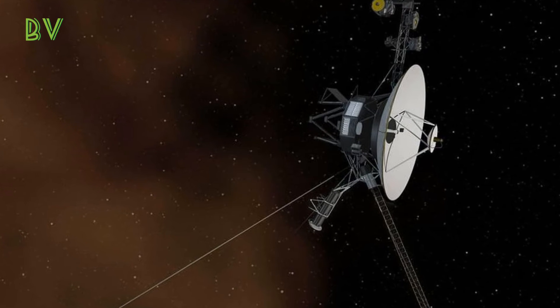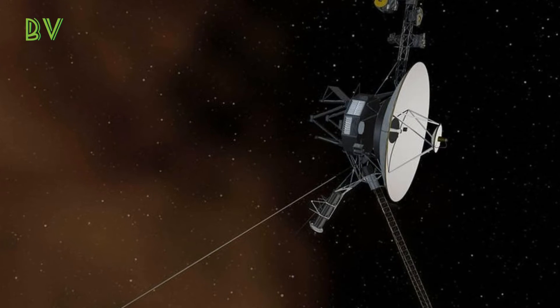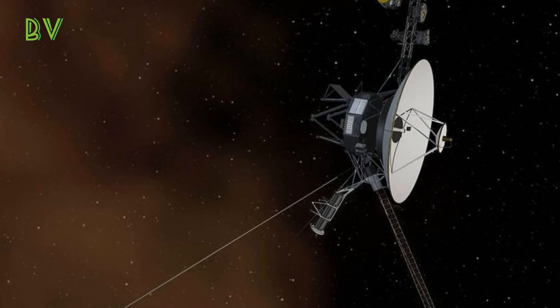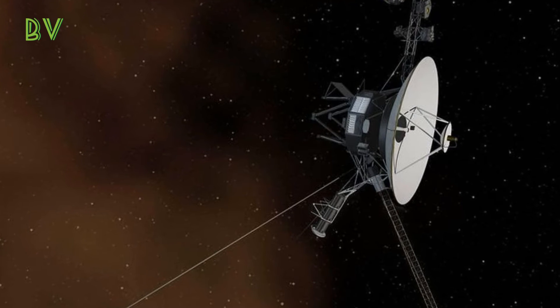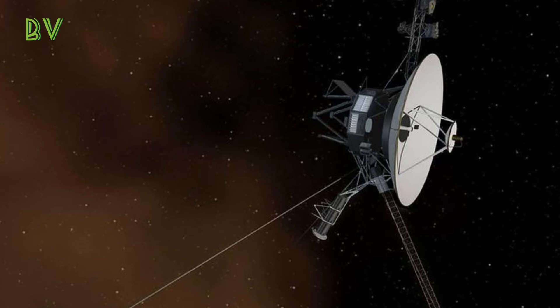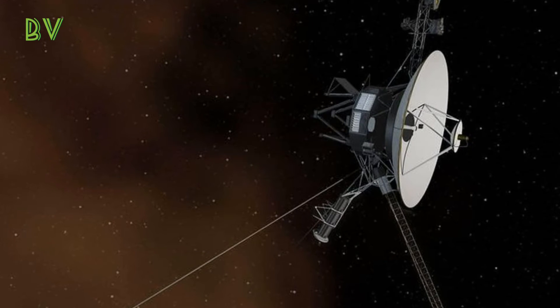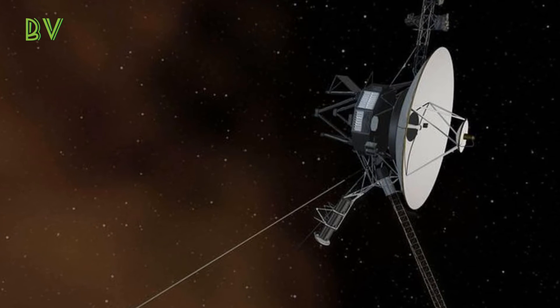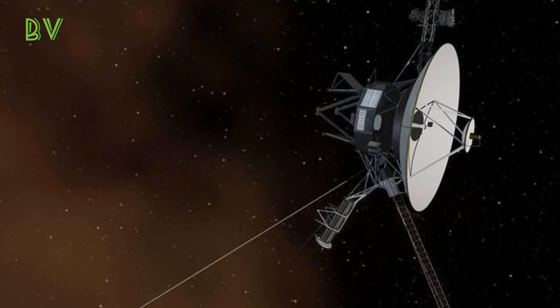"To make sure we could safely test the thrusters," JPL Chief Engineer Chris Jones said in a news release on Tuesday, "the Voyager team essentially turned the key." They transmitted the commands for the TCM thrusters to fire up for 10-millisecond pulses and reorient the spacecraft.